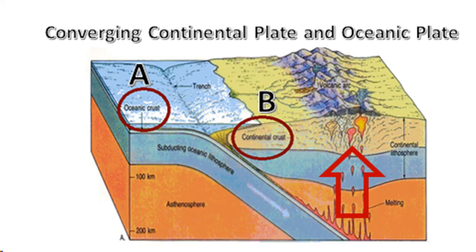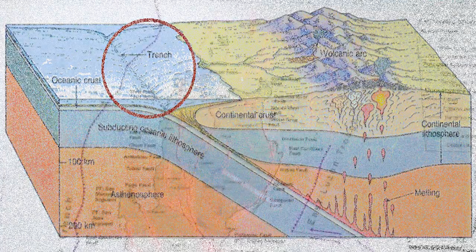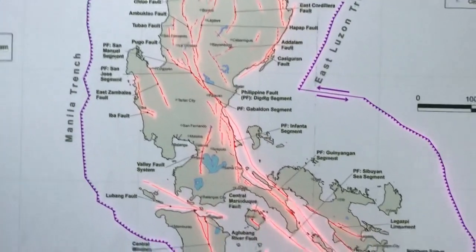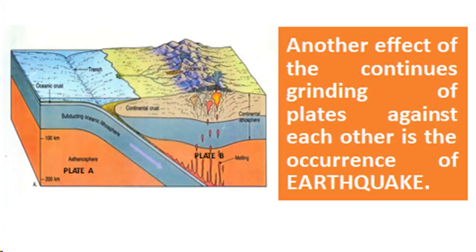For the oceanic crust, one important geologic feature is formed — the trench, also called submarine valleys. Ocean trenches are the deepest part of the ocean. One of the deepest is the Philippine Trench with a depth of 10,540 meters. Another effect of the continuous grinding of plates against each other is the occurrence of earthquakes.